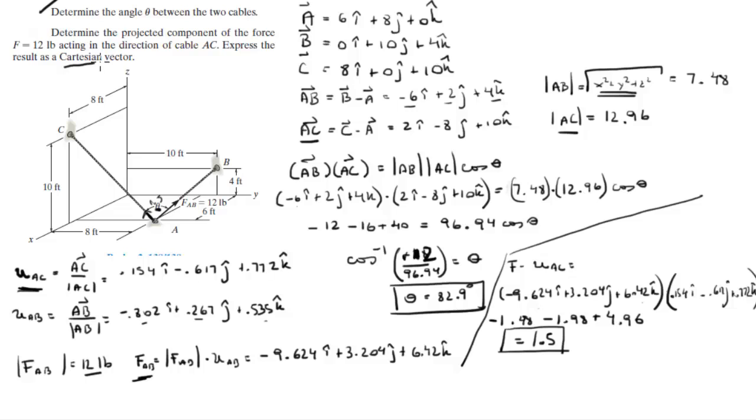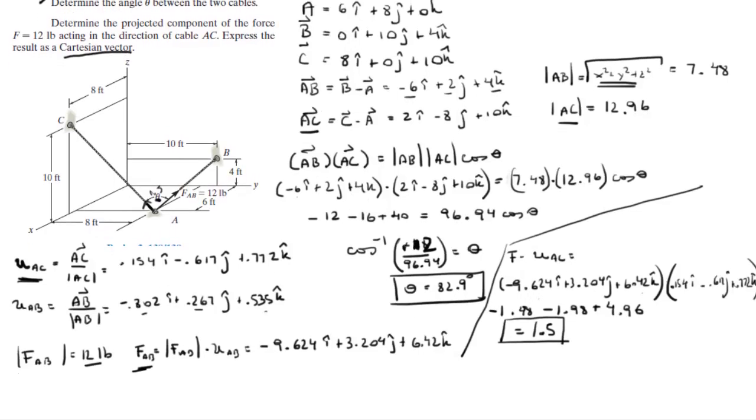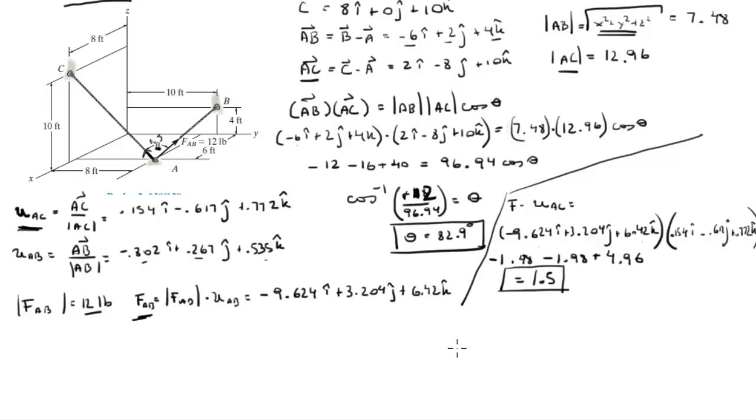However, they want you to find the Cartesian vector form, which is very easy to find. All you got to do is multiply this by the unit vector AC which we have already. So 1.5 times unit vector AC will give you the projection in Cartesian vector form, which is 1.5 times 0.154...